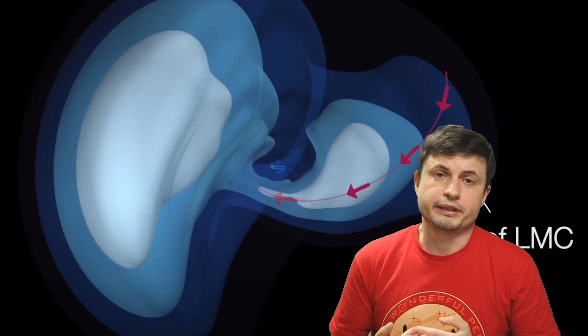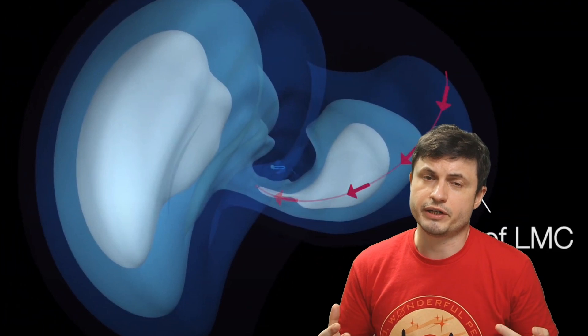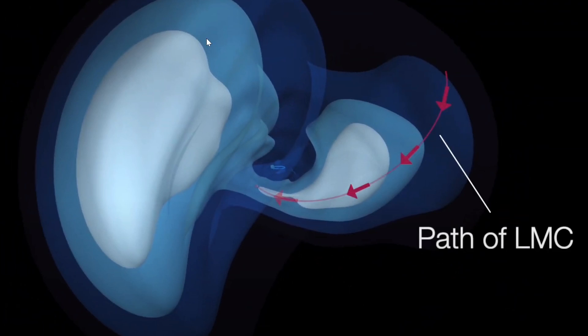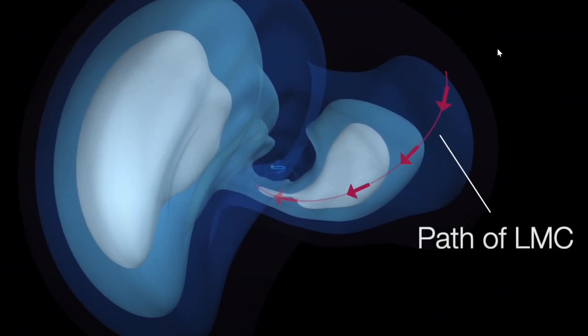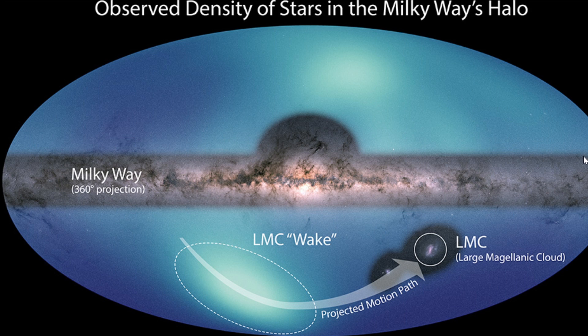And if it wasn't for the dark matter halo, and if it wasn't for the interaction with this really large, very massive formation surrounding the Milky Way galaxy, it would be really difficult to explain the path that the LMC seems to have taken. So this over density that you see in this picture seems to be a pretty good explanation for the projected path of Large Magellanic Cloud as it moves in the region around the Milky Way.